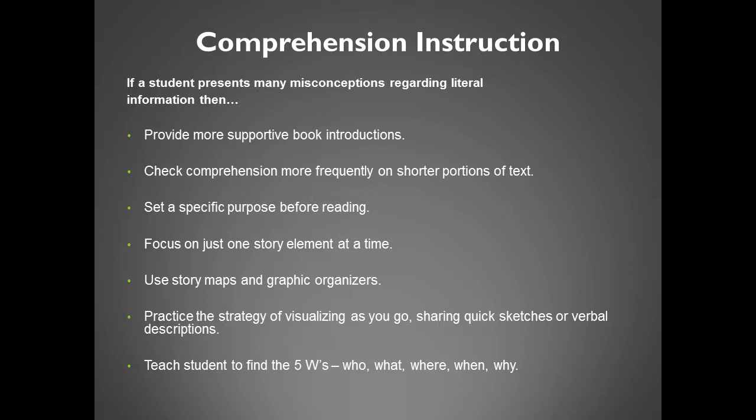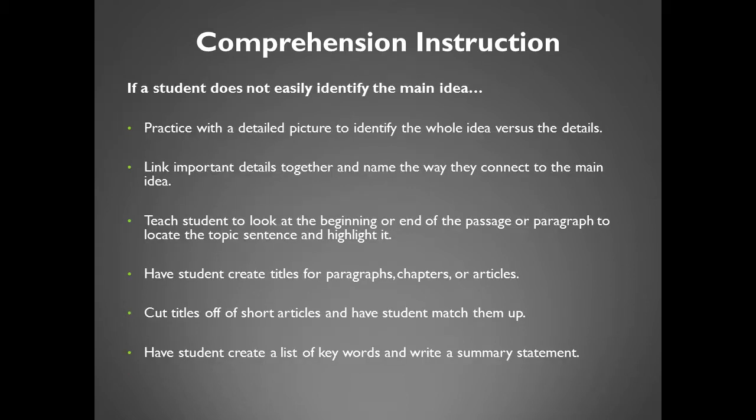Practice the strategy of visualizing as you go, sharing quick sketches or verbal descriptions. Teach the student to define the five W's — who, what, where, when, why. If a student does not easily identify the main idea, practice with a detailed picture to identify the whole idea versus the details. Link important details together and name the way they connect to the main idea. Teach the student to look at the beginning or end of the passage or paragraph to locate the topic sentence and highlight it. Have the student create titles for paragraphs, chapters, or articles. Cut titles off of short articles and have students match them up.